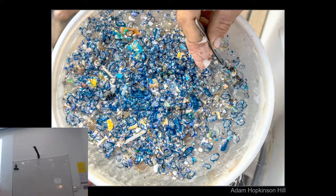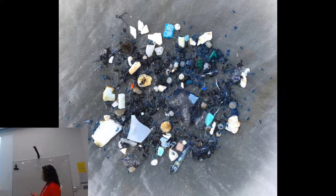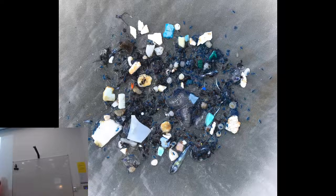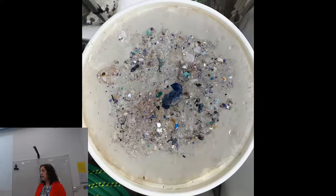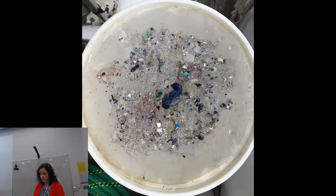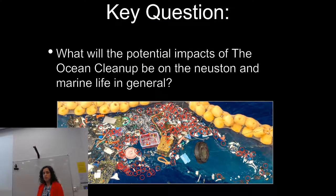Every one of these blue rings is a Valella; there are some blue sea dragons right there; all these little purple dots are really young violet snails. Here's another example where you have plastic intermixed with larval fish, young Portuguese man o' wars, and all these black dots are halobates — those open-ocean insects. Some samples also contain gelatinous organisms which may be jellyfish. The neuston and the plastic are out there intermixed together.